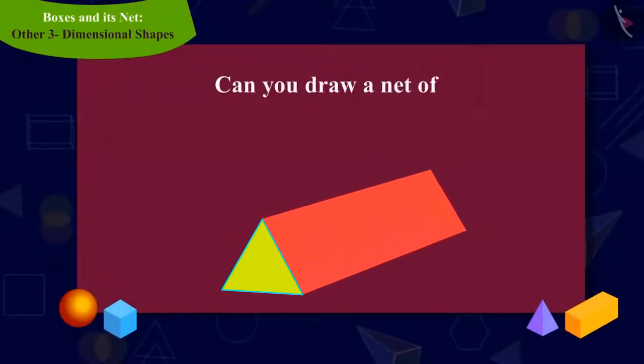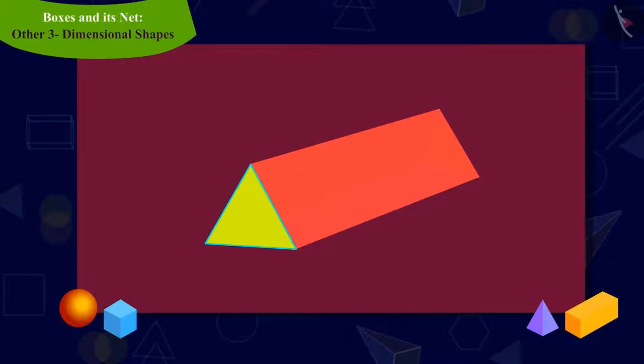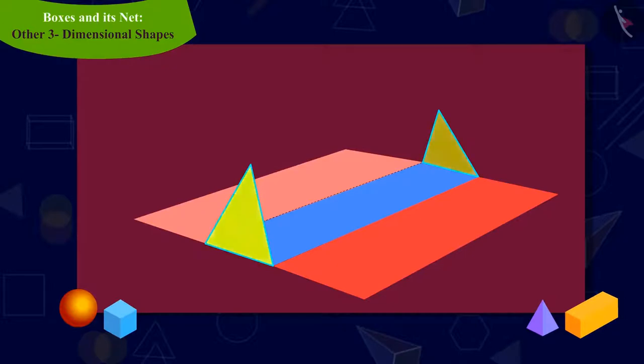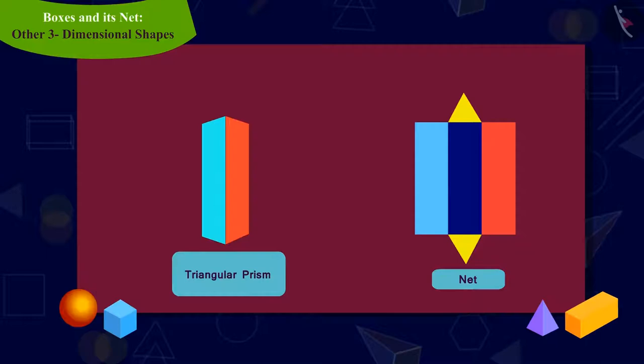Can you draw the shape of the net of this triangular prism? To do this, come, let us open the prism. In this way, by opening the right rectangular face, we can begin to draw the shape of a net. Then, at the end, we can open both the remaining triangular faces in such a way as to form the shape of the net of a triangular prism.